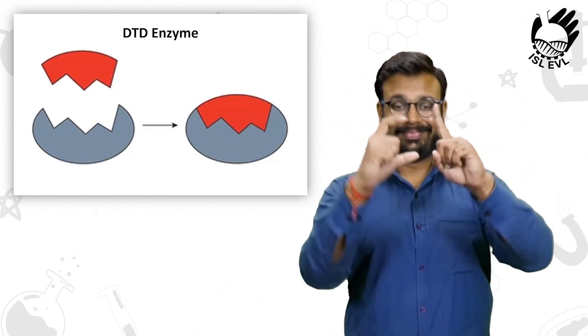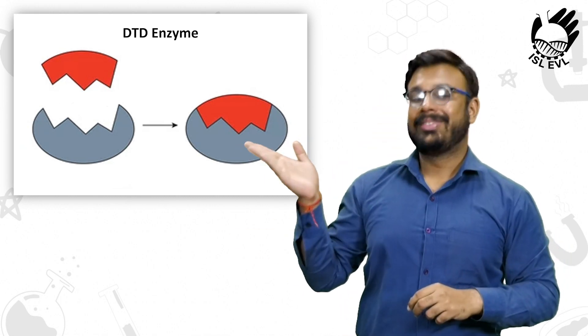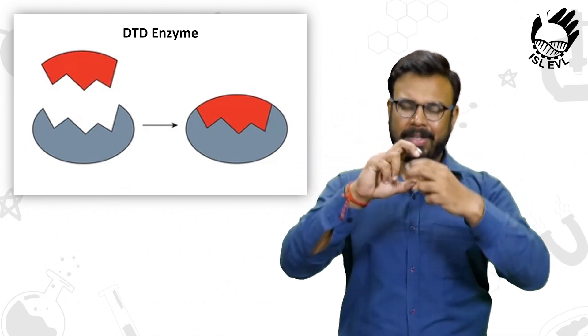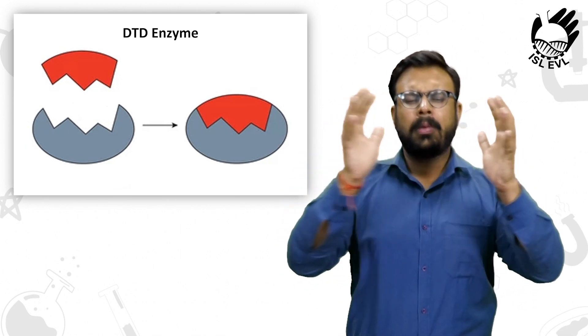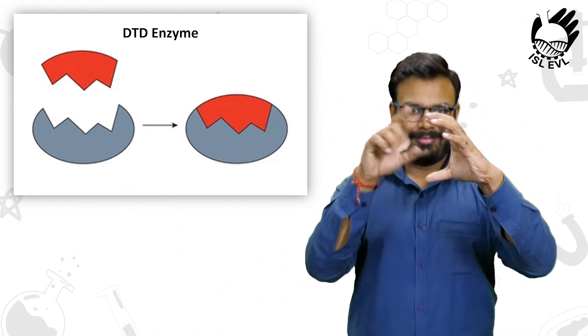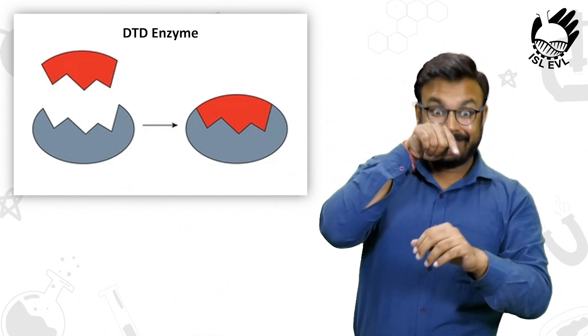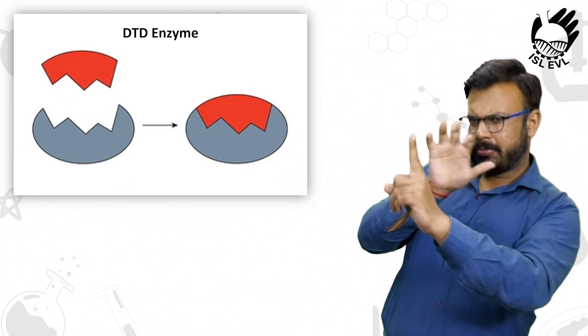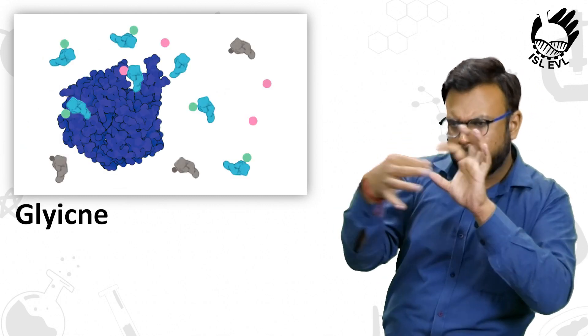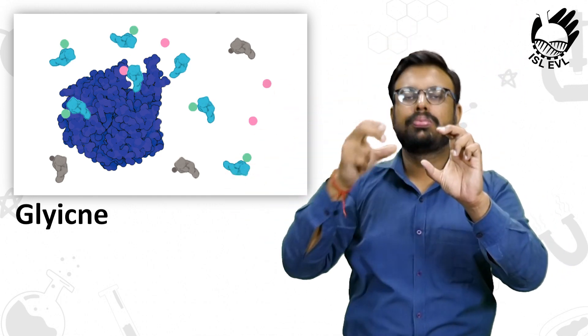DTD, it's signed like this. DTD is an important part of the machinery which forms proteins. Given its size, glycine snuggles into the DTD pocket too. But the DTD identifies its specific tRNA and lets it go, unperturbed.